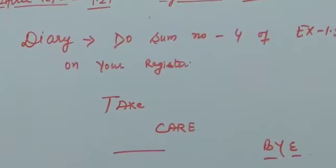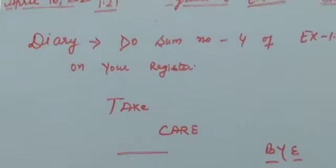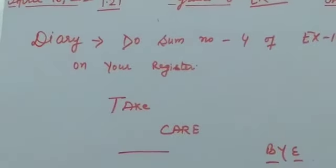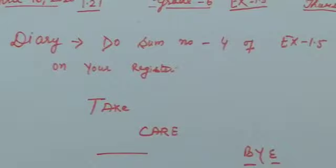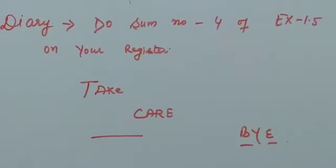Today's homework is: do sum number 4 of exercise 1.5 on your register. Sum number four. Very easy. You will do it yourself on the register neatly. Take care, and goodbye.